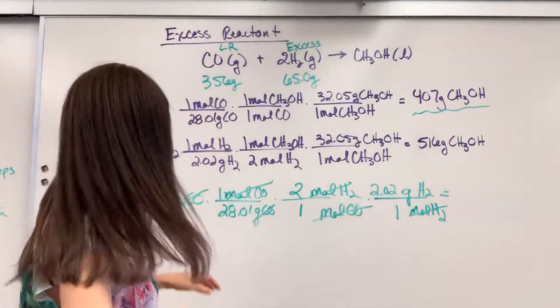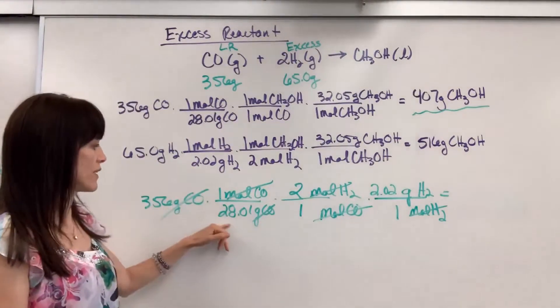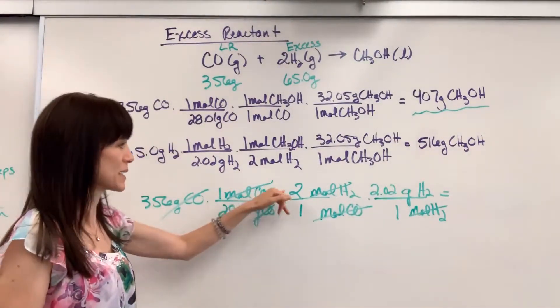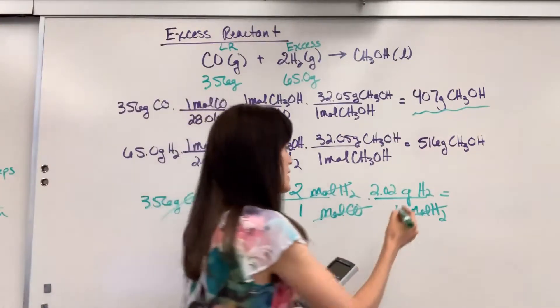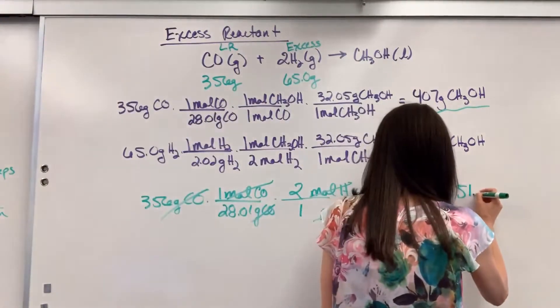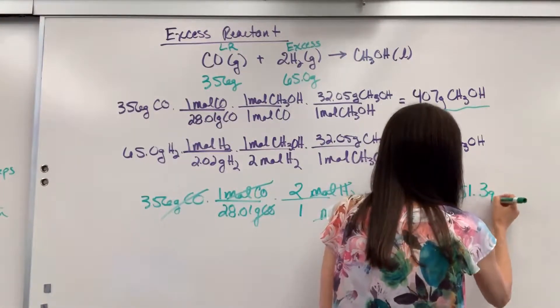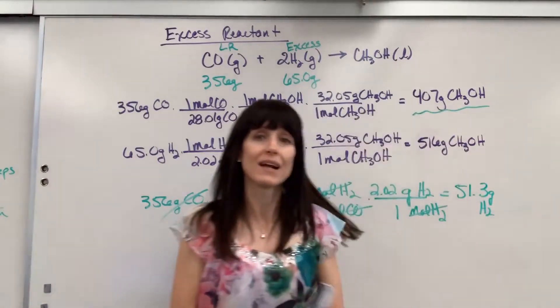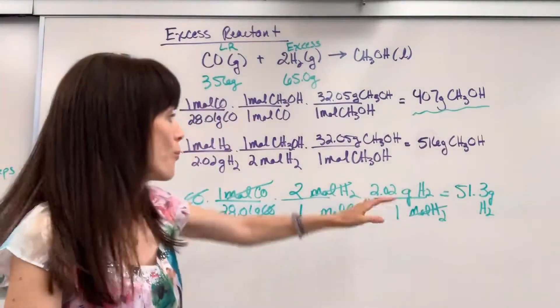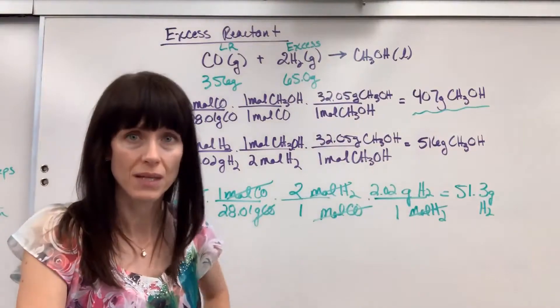And putting this in our calculator, 356 divided by 28.01 times 2 times 2.02 gives us 51.3 grams of hydrogen. Now here's my question for you. What does that number mean?